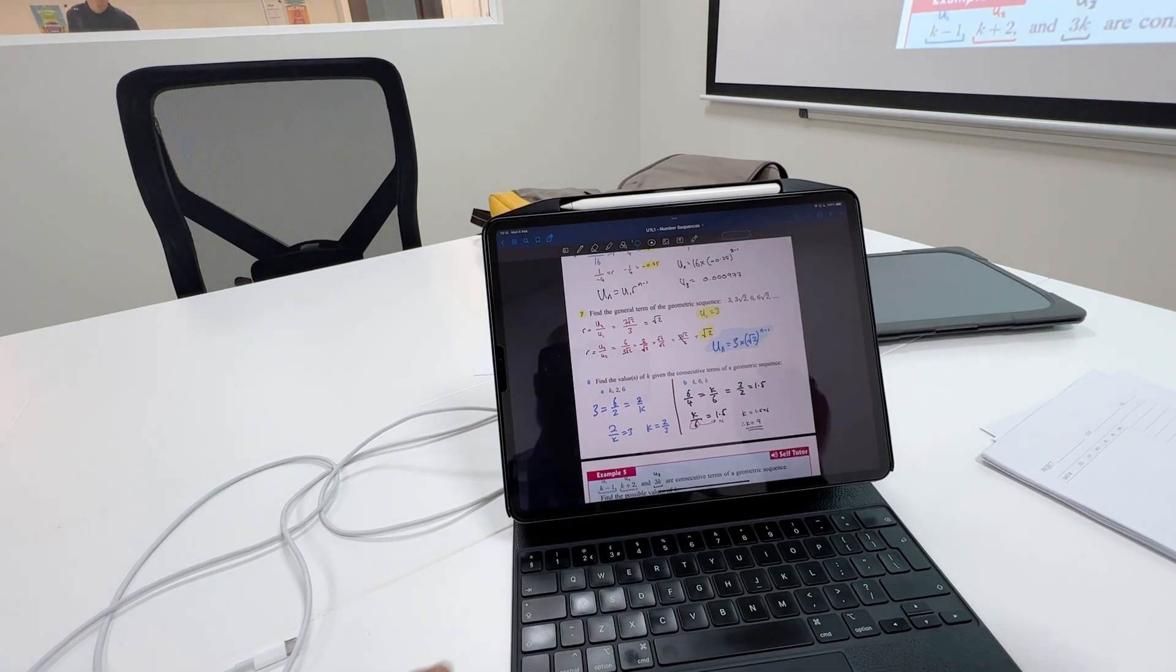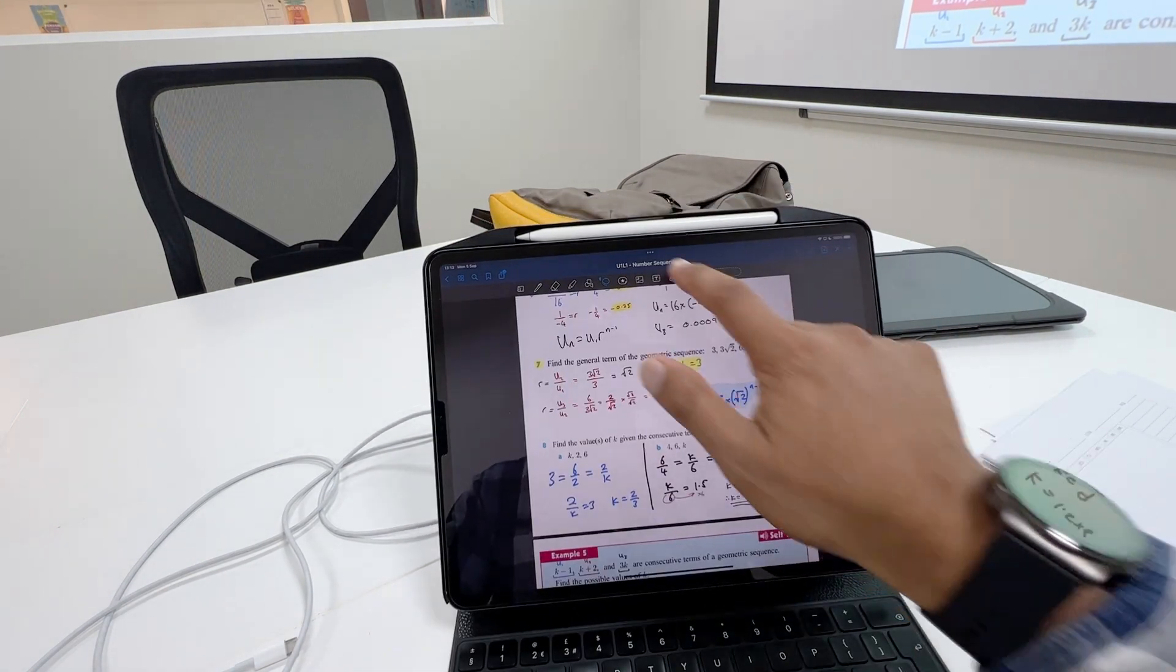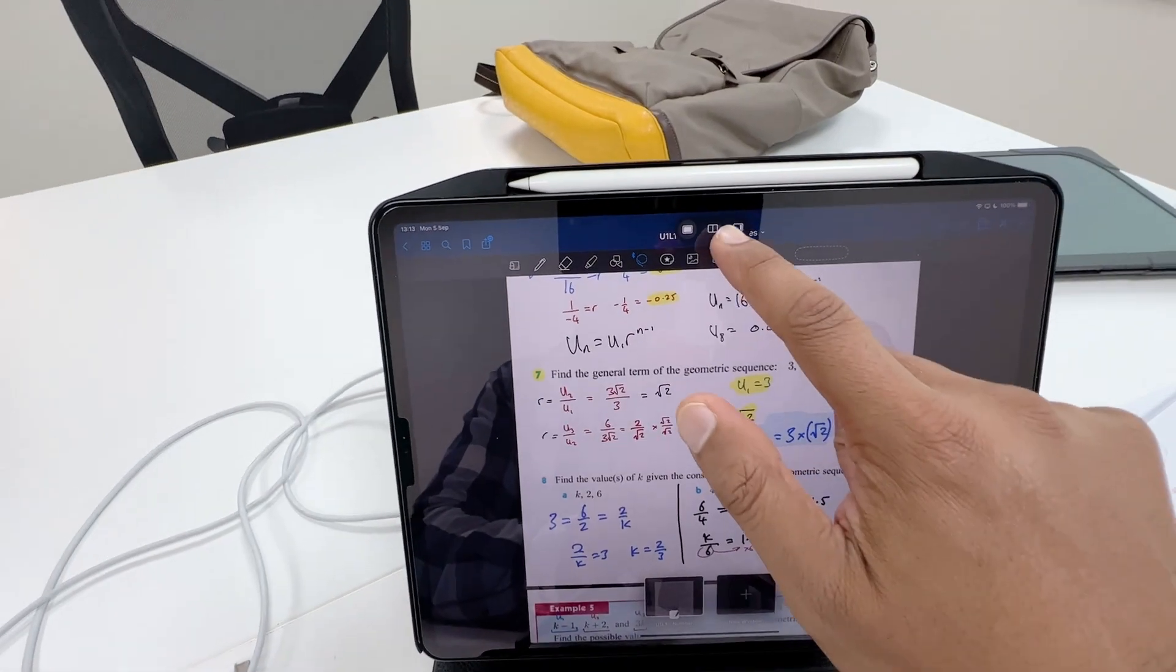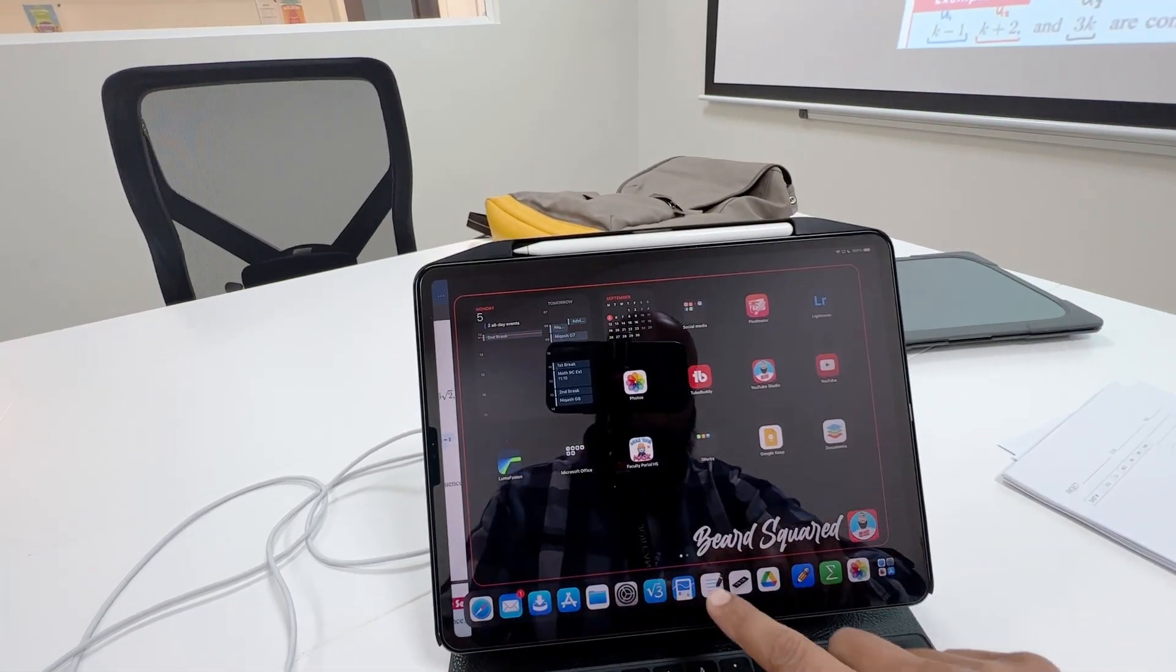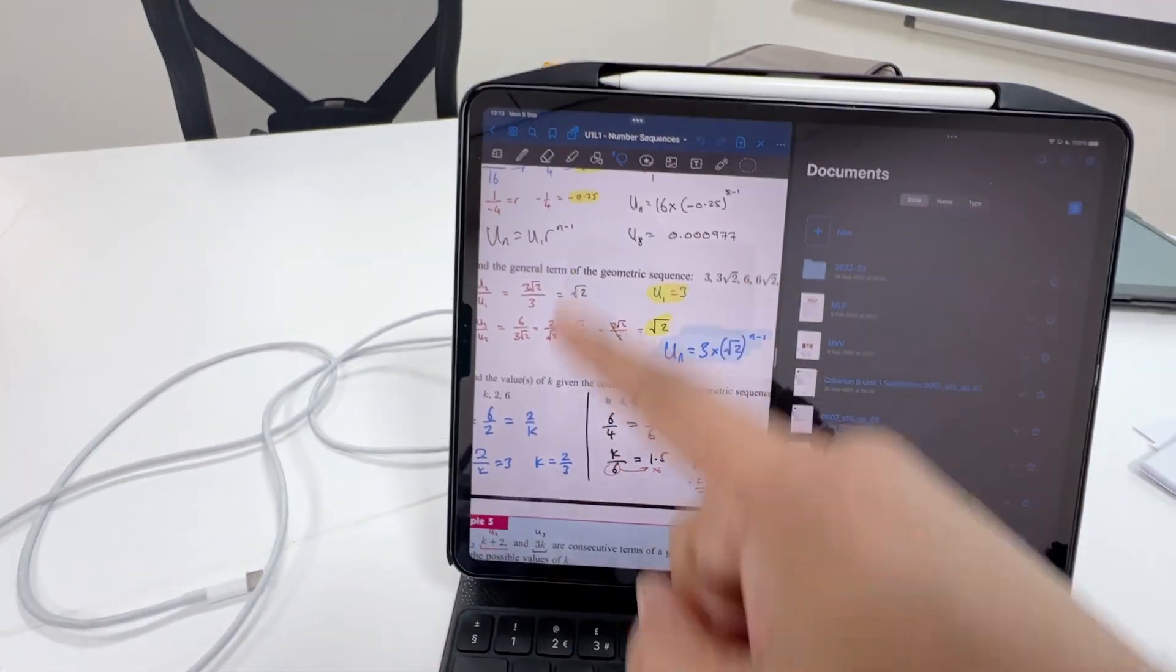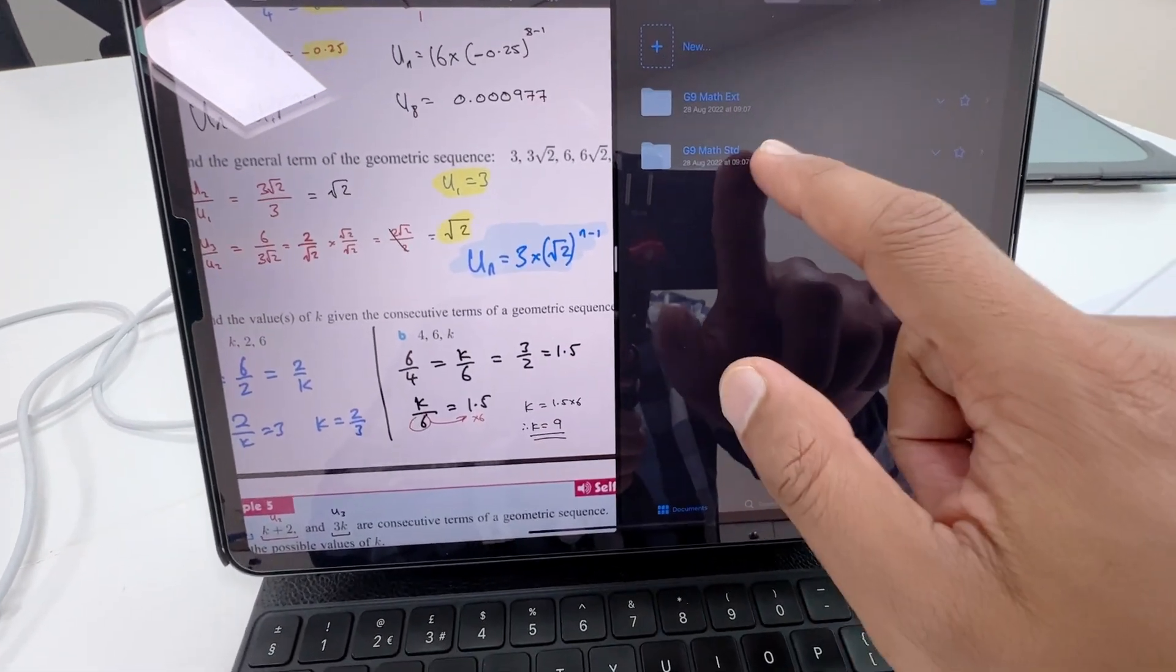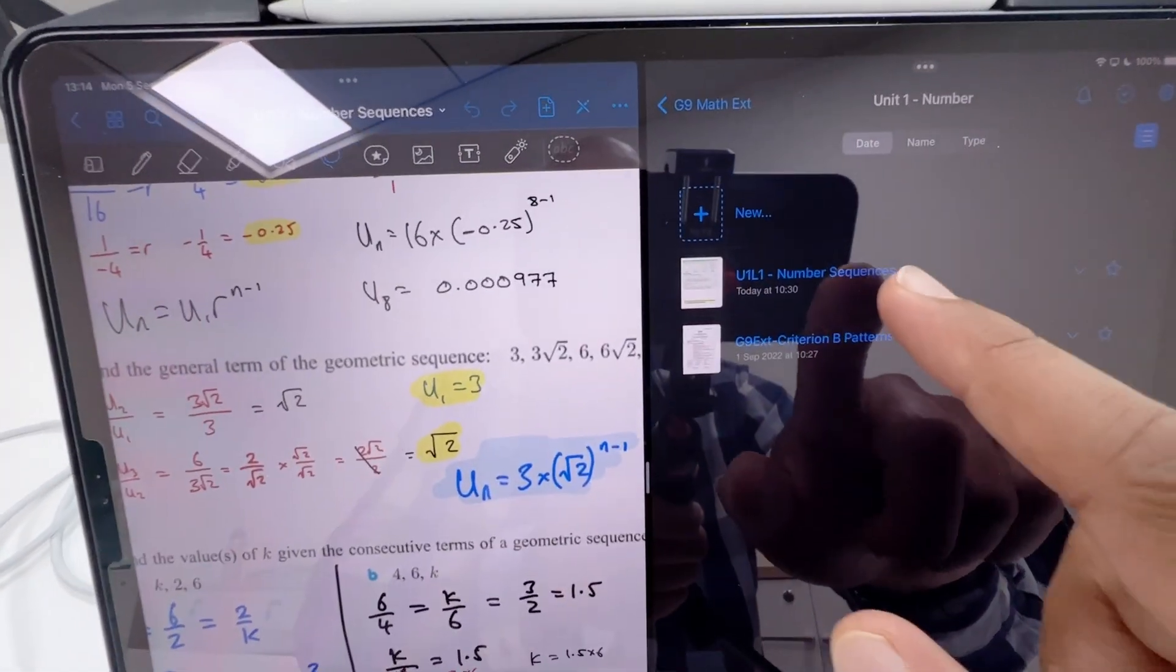I'm going to open up the split view. I'm going to multitask here, click on the center one, and then open up GoodNotes again. Which page do I want to open? I'm going to open the exact same one—Unit 1, Lesson 1, Number Sequences. I'm going to find where that is. I know where it is because I've made it. Unit 1, Lesson 1, Number Sequences is this one here.